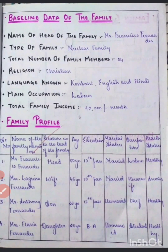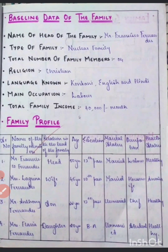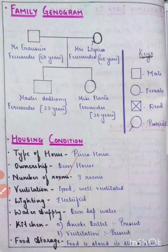This is for community health nursing. In case of medical-surgical nursing or other NCPs, you will have to mention the date of admission, the diagnosis, when you did the assessment, the bed number, and the hospital name.